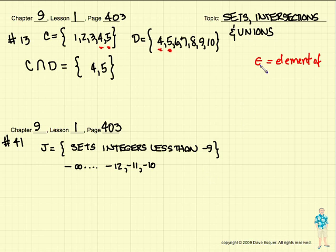So problem number 41, remember this symbol up here for the element. This kind of sideways E stands for the element. And problem 41 says, is negative 5 not an element of J?